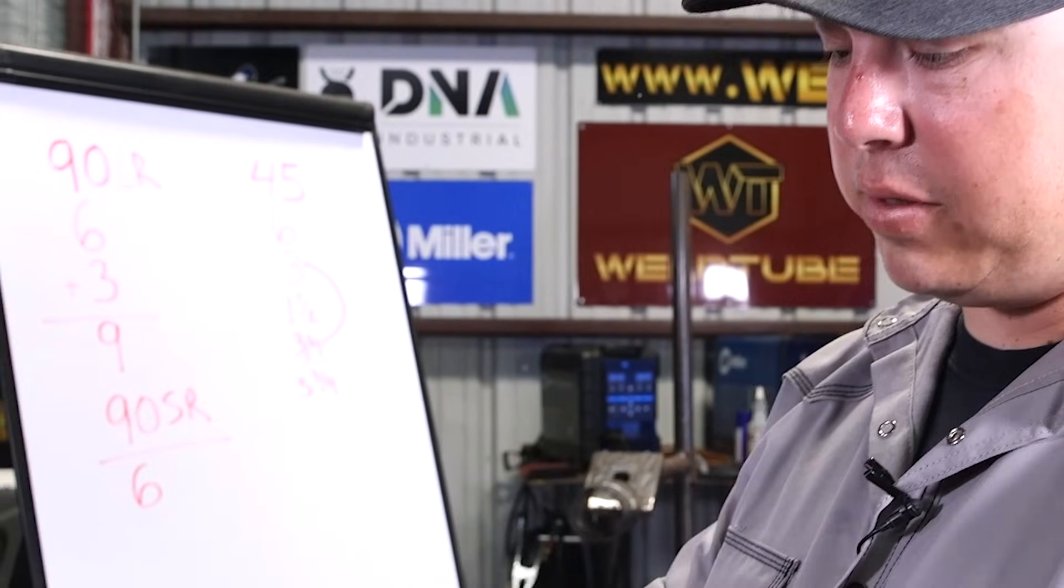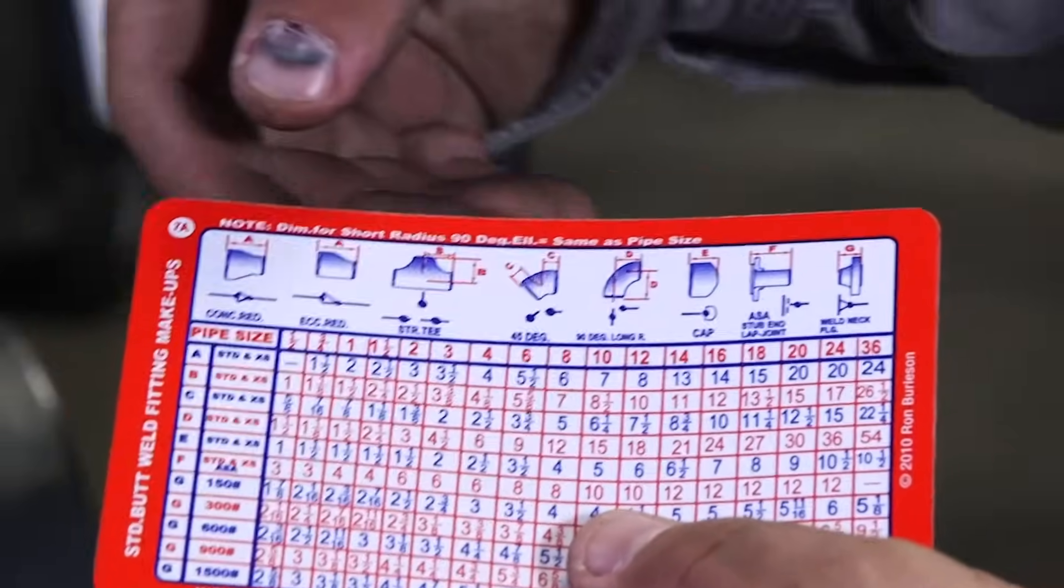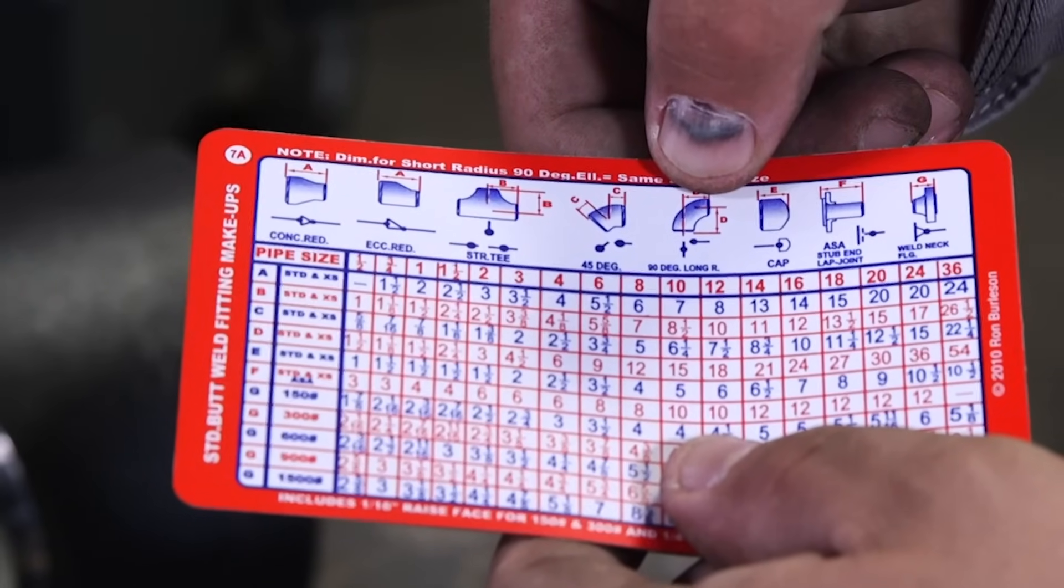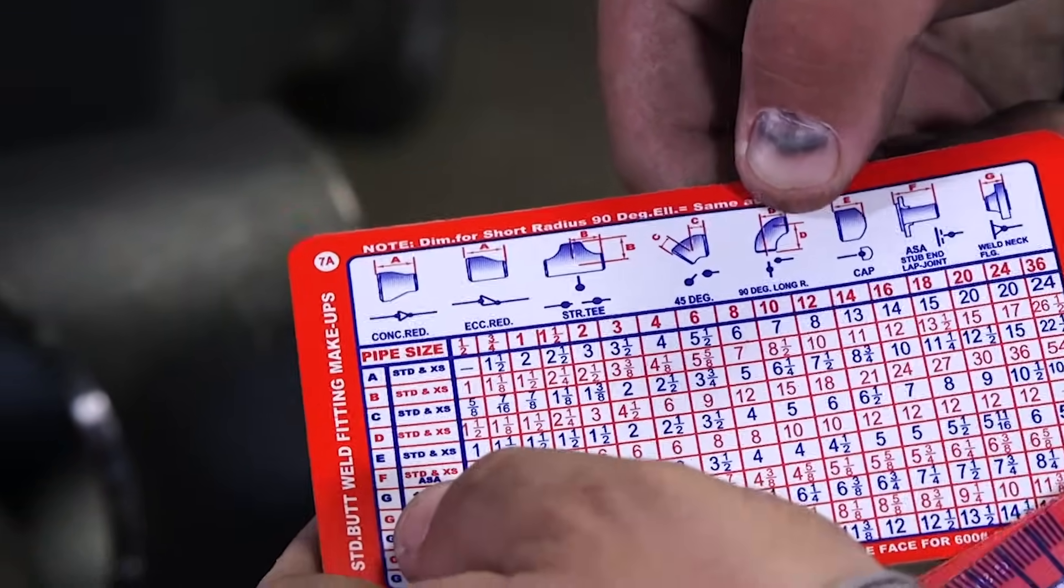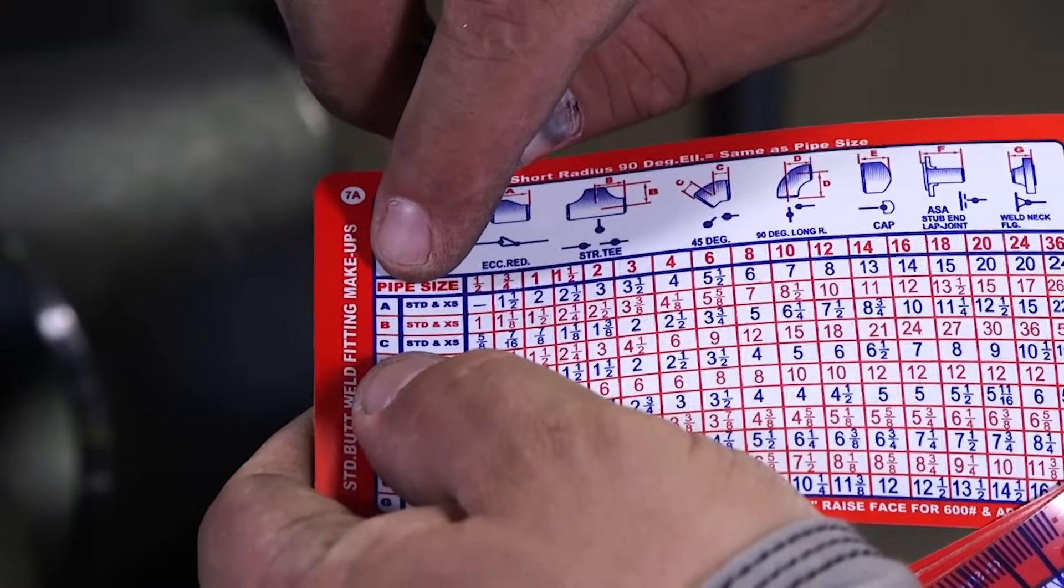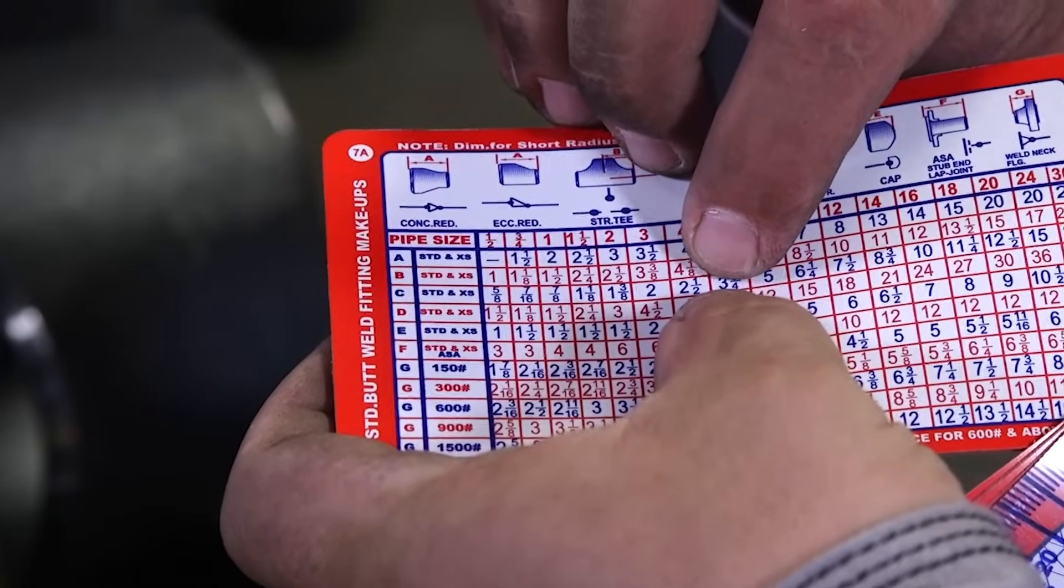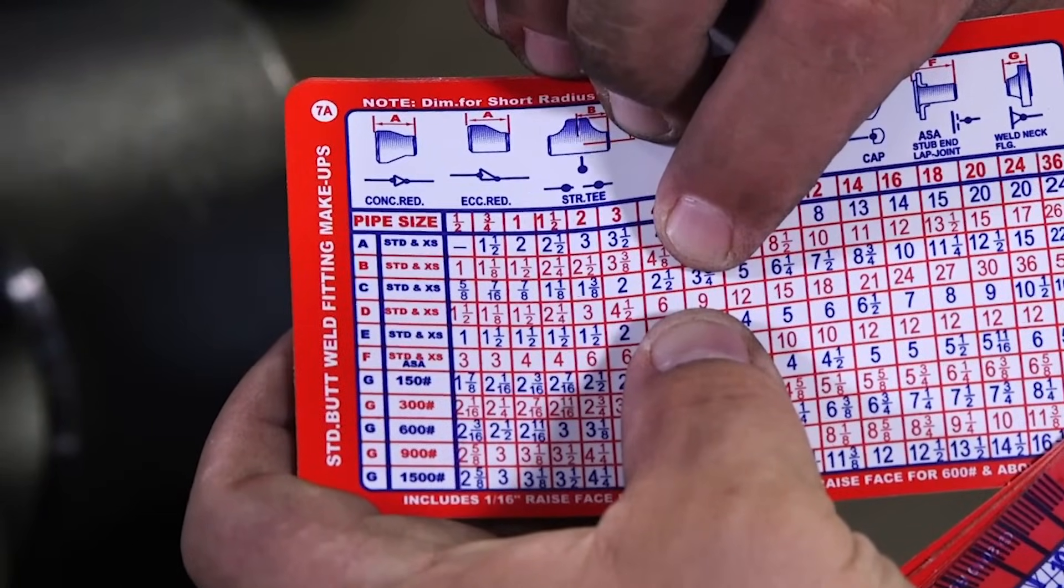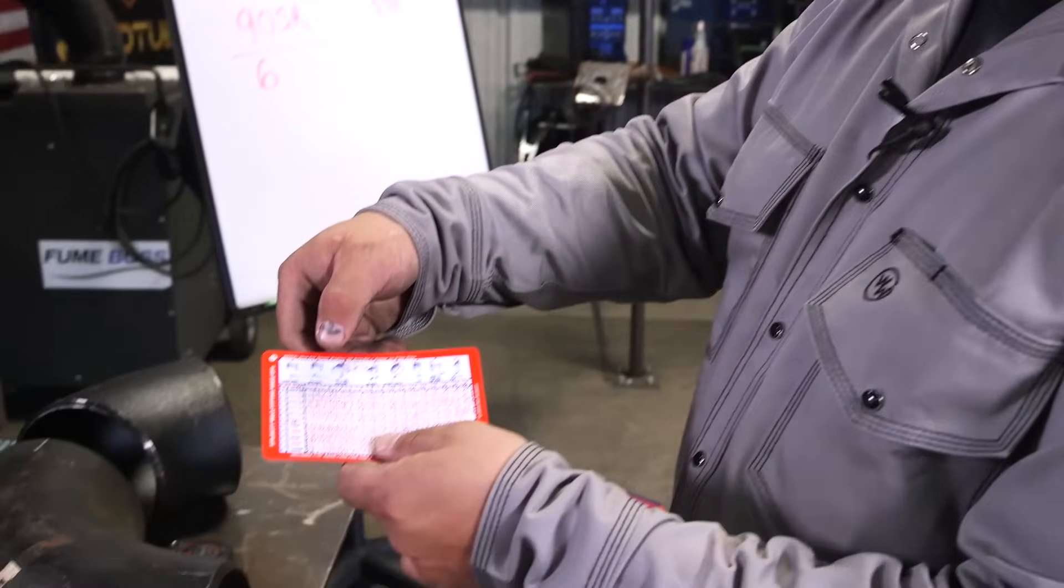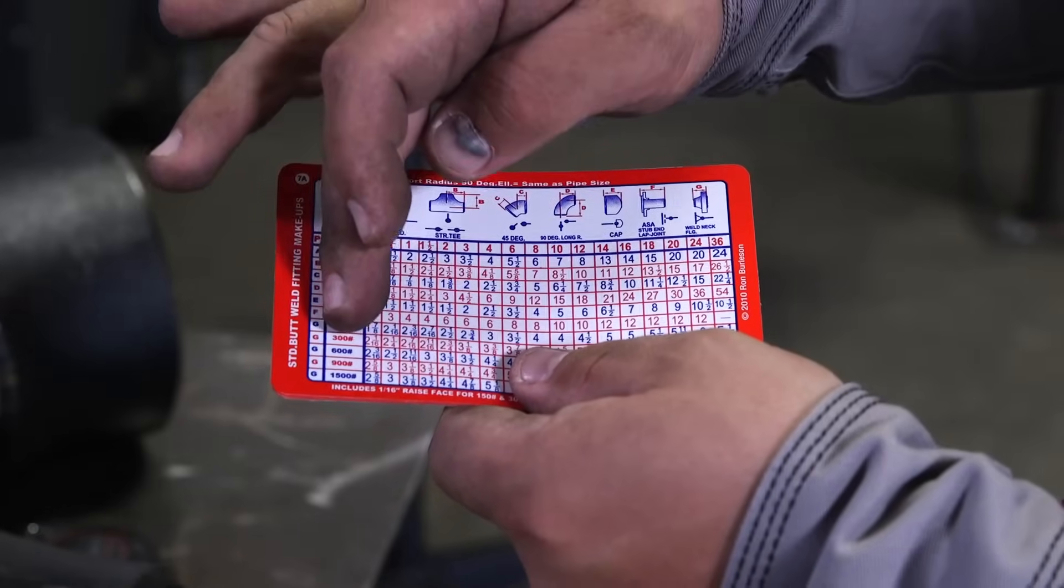Alright, so this is how you find the takeoffs here on the Chico cards. We're going to go to page 7A, which is our standard butt weld fitting makeups here. We're going to go up to top and look for our long radius 90 degree, which has the letter D. We go to letter D. And on this top header, now we're going to find our pipe size, which is 6 inches. Run it down, and there's our 9 inches for our takeoff. And you would do the same thing for 90s, flanges, and any other kind of fitting you're looking to find the takeoff here. It follows the same process. Find the letter, follow it down, and then follow your pipe size on the top header.